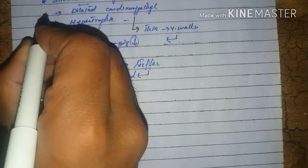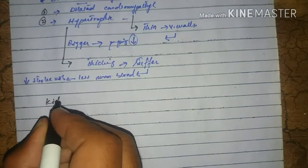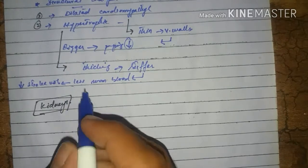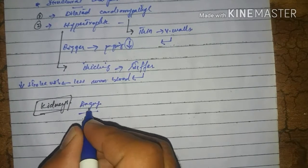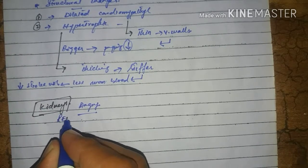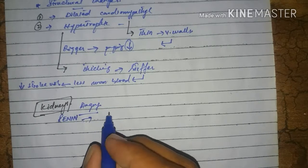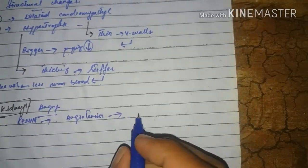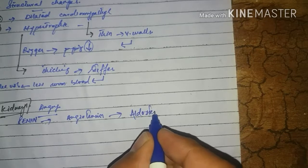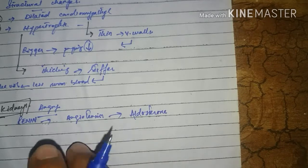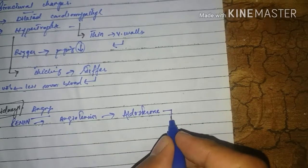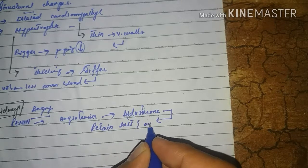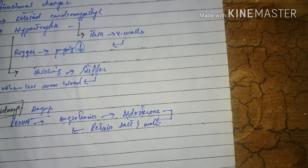Now moving towards the kidneys: kidneys need a lot of blood for their working. When there is less blood, the kidneys become stressed and release renin in response, which stimulates angiotensin, which in turn stimulates aldosterone. Aldosterone retains salt and water, causing fluid accumulation or retention.